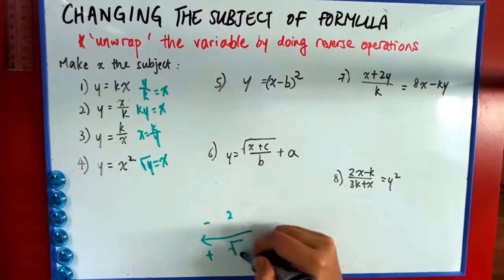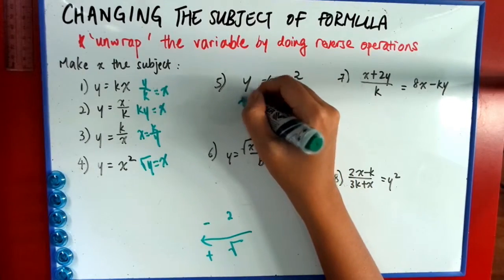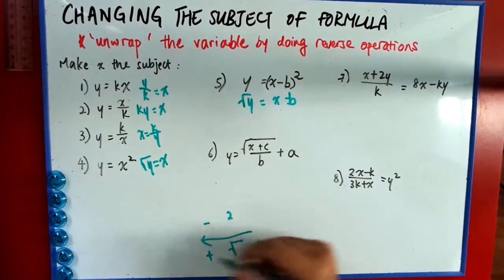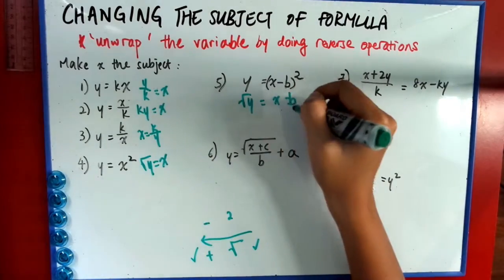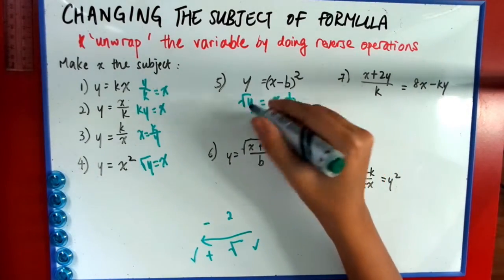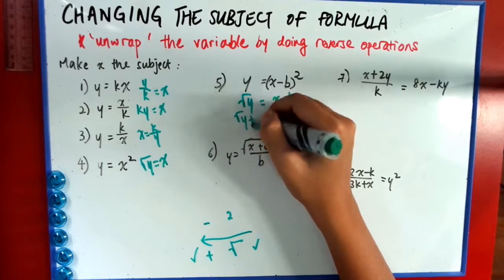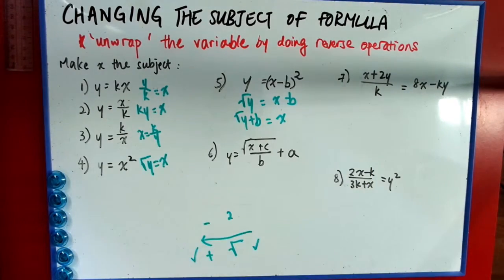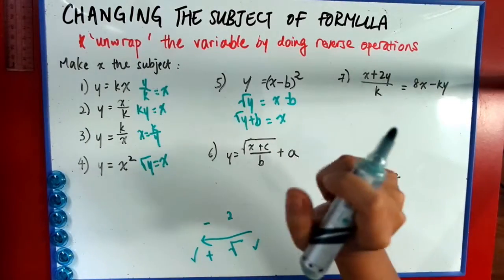So all I have to do is I have to reverse this operation. And instead of square, I do a square root. Instead of minus, I do a plus. So what I have to do is first I do the square root. So I get root y equals x minus b. After that, then I do the plus, which is basically root y plus b is x. So there I have it. X is my subject. So the key is to isolate x out.